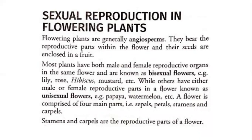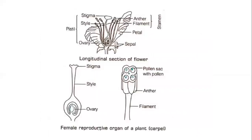If you come to the offline class, we will show you both flowers — unisexual and bisexual. A flower is comprised of four main parts: sepals, petals, stamen, and carpel. Stamen and carpel are the reproductive parts of a flower. Do you know that? Carpel is the female reproductive organ and stamen is the male.